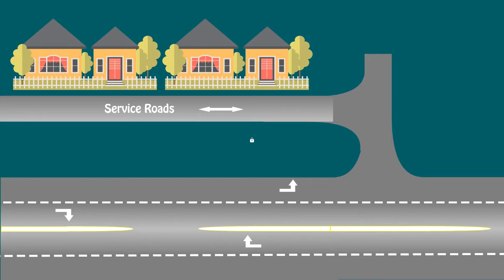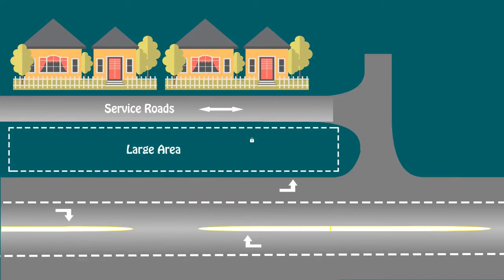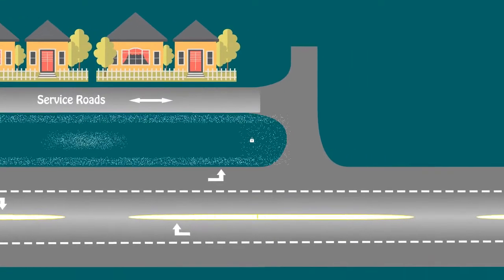But there are some implementation issues. One, service roads require large amounts of space. Where space is limited, a service road may fit behind the properties. Two, parking and other potential visual obstructions should be carefully controlled where service lanes rejoin the main road.